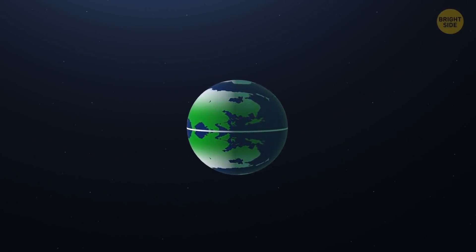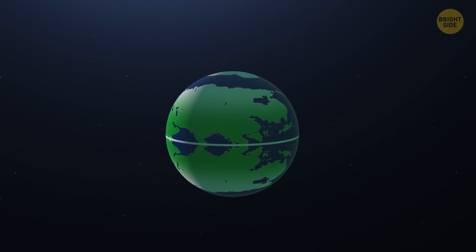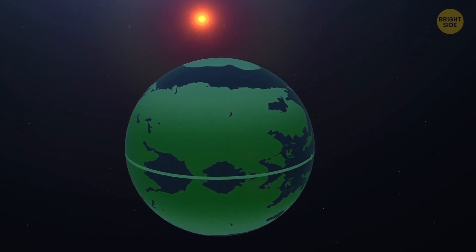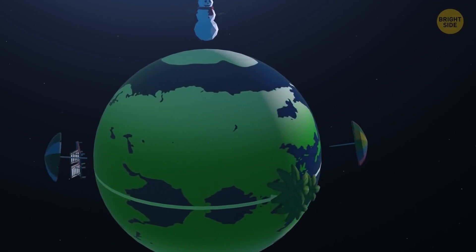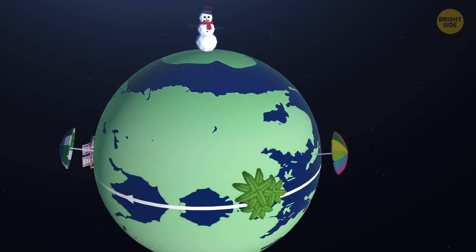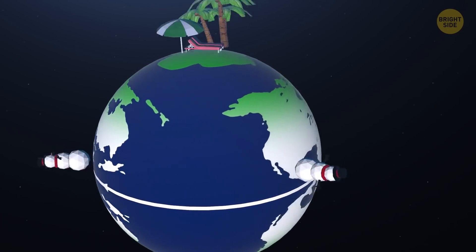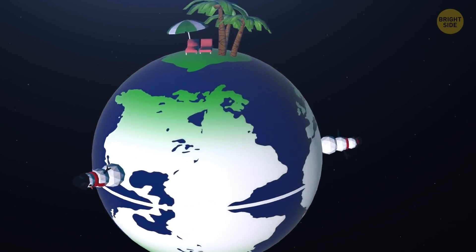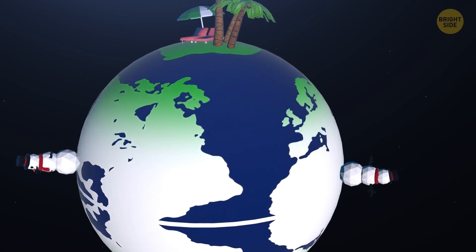It would be one thing if the Earth's continents and oceans were situated symmetrically against the equator when the change of direction happened. In this case, the only change people would notice would be the climate, which would turn into a mirror image of the current one. In other words, there'd be no dramatic changes.